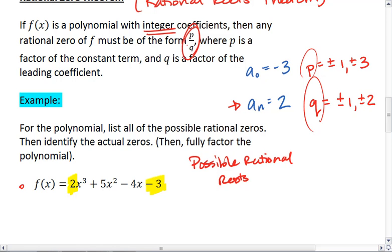We do that by combining our factors for p with our factors for q with p divided by q. Let's start with p equals 1: we get 1 over 1, which is just 1, and then 1 over 2. If p is 3, we get 3 over 1, which is 3, or 3 over 2.